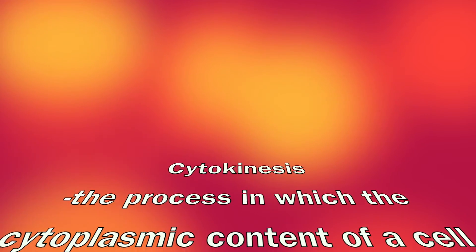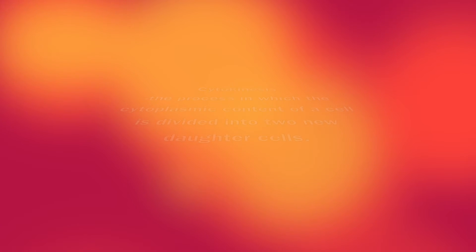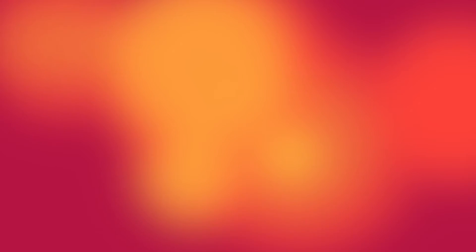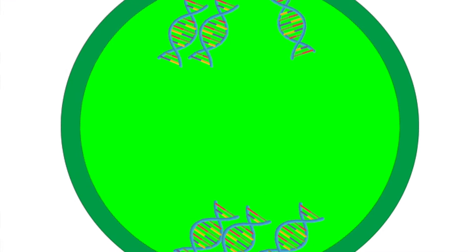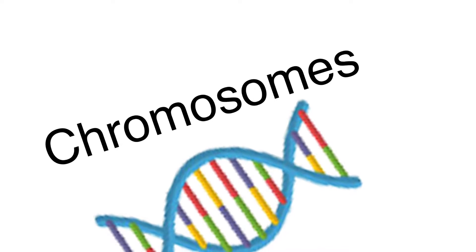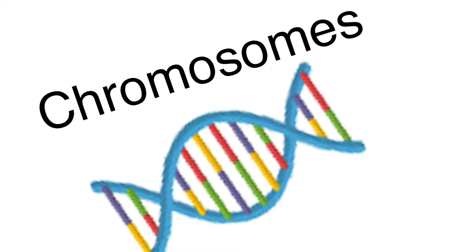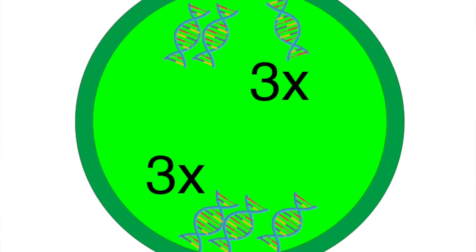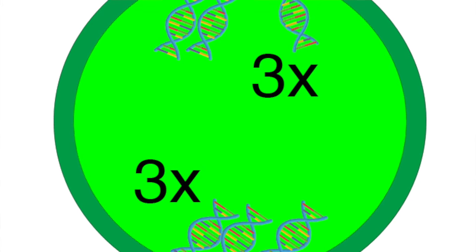First off, the scientific definition of cytokinesis is the process in which the cytoplasmic content of the cell is divided into two new daughter cells. Before cytokinesis, the process mitosis creates an equal amount of chromosomes on each side of the cell. Chromosomes are little thread-like structures made of nucleic acid and proteins carrying the genetic information of the cell. When cytokinesis occurs, each cell needs an equal amount of chromosomes.